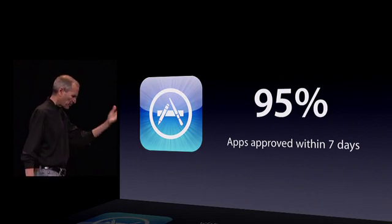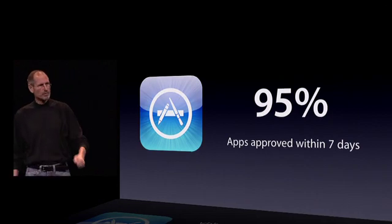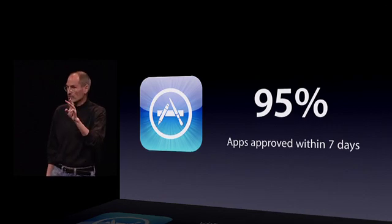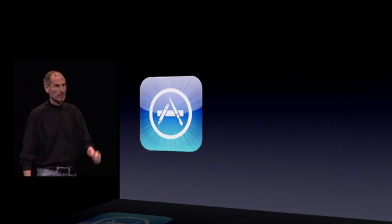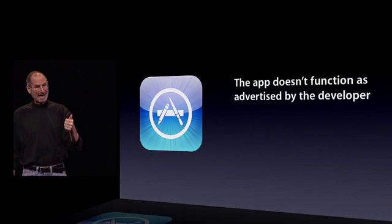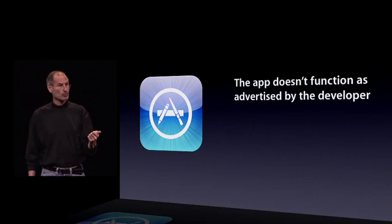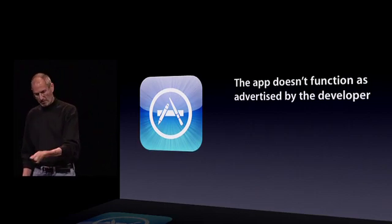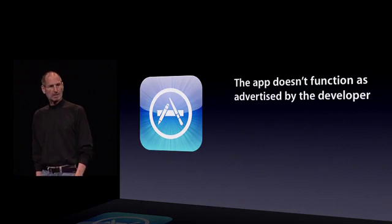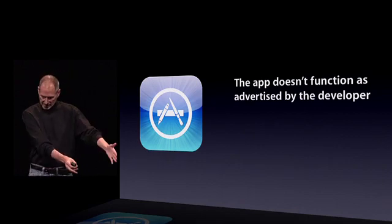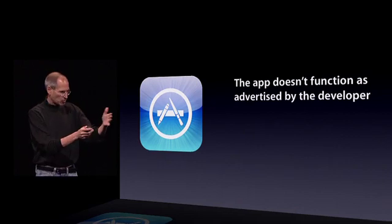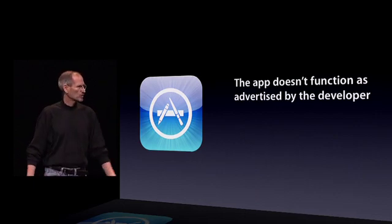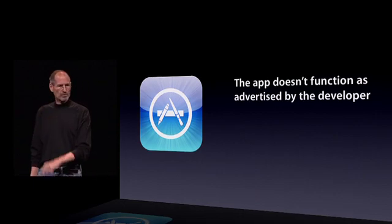What about the five percent that aren't? Why don't we approve these apps? Let me give you the three top reasons. The number one reason: the app doesn't function as advertised. It doesn't do what the developer says it does. So we reject it — we say, you said it did this, it doesn't do this. Change your description or change your app.